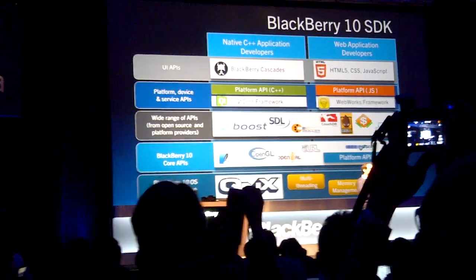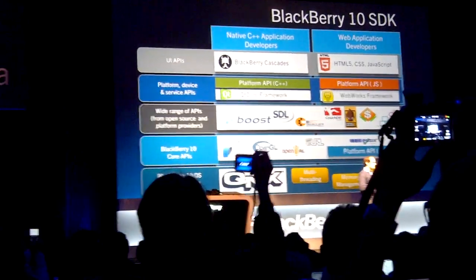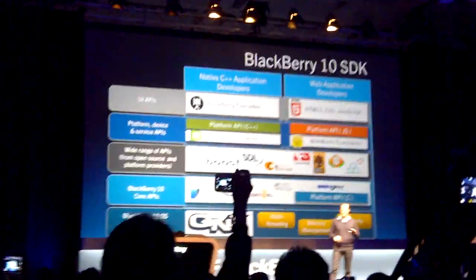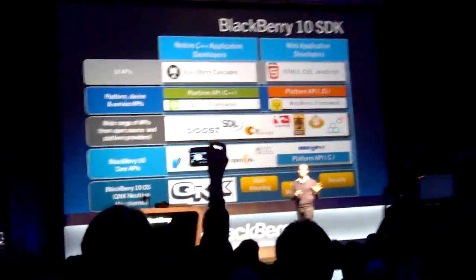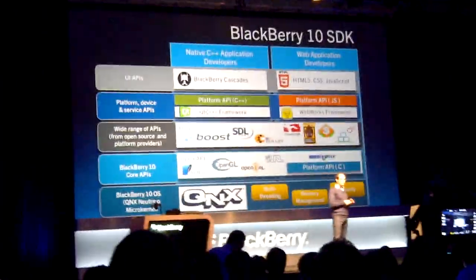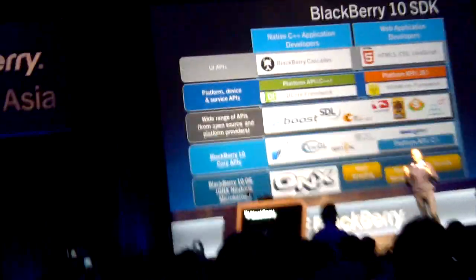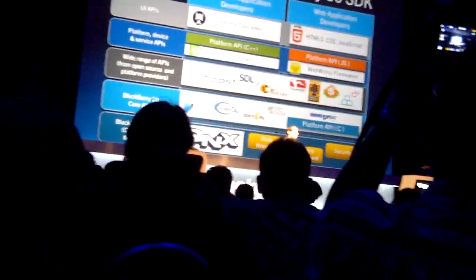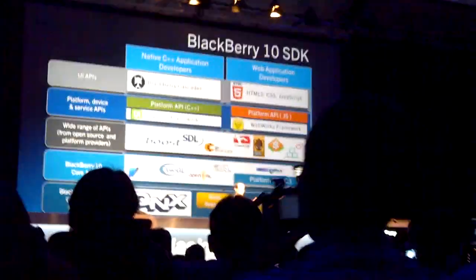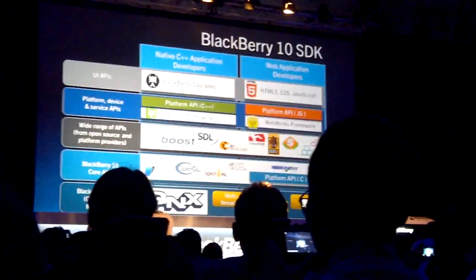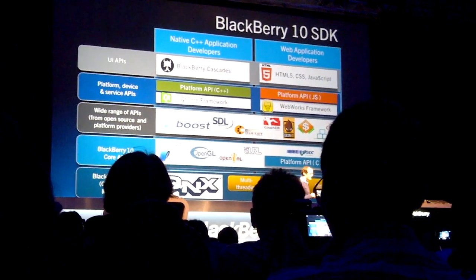As you heard from George, it's really built on two pillars: a native pillar, crowned by Cascades as that rich UI framework for driving next generation UI; and web with HTML5, where you really have the web frameworks built on top of WebWorks, providing developers with what we believe is going to be the next generation of content across devices and across the internet.